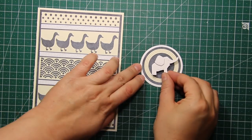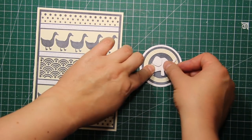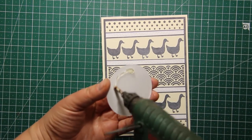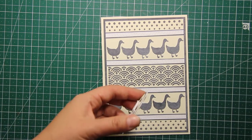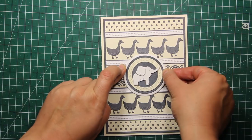The original pattern had elephants in it and I thought of creating a border of elephants but I ended up using just one. And finally I'm using hot glue to attach this circle with the elephant right in the center of my card.